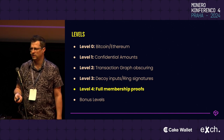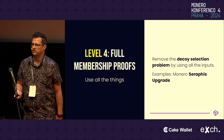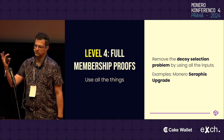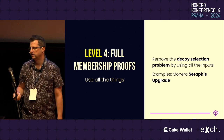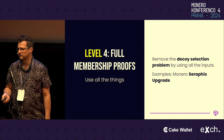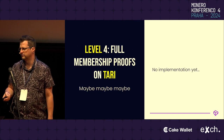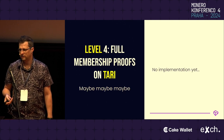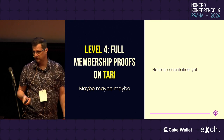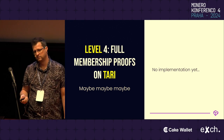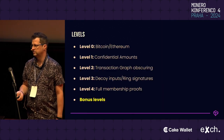The next level up from this would be using full membership proofs, which removes the whole decoy selection problem, and Monero Seraphis is a good example of that. I don't have an example yet of how to do this on Tari, but if you're interested in doing this, I've got some ideas — come and chat to me.